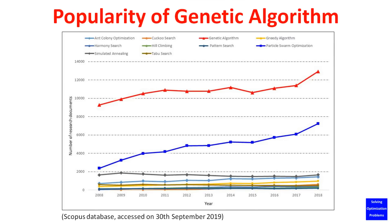Did you know that genetic algorithm, or GA, is one of the most popular stochastic optimization algorithms, often used to solve complex large-scale optimization problems in various fields?